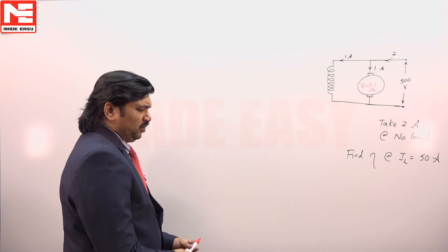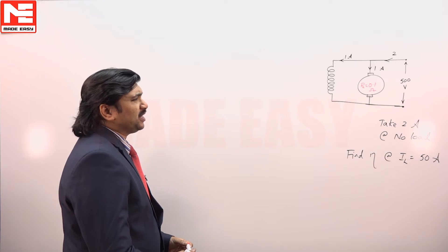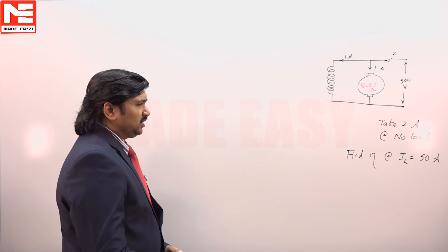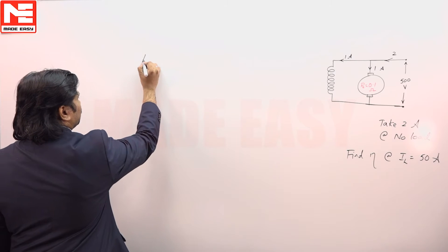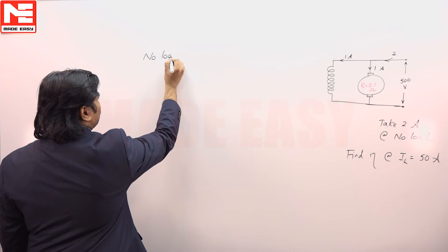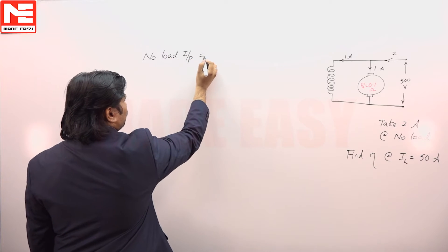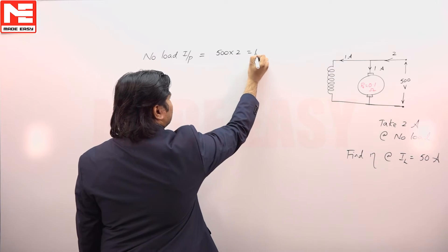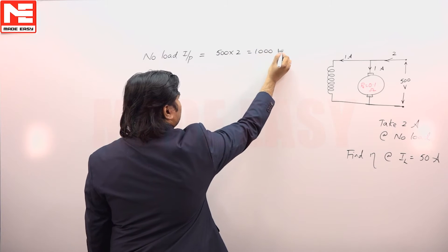It was given 500 volt shunt motor is drawing 2 amperes on no load. So, what is no load input? V into I L, that is 1000 watts.